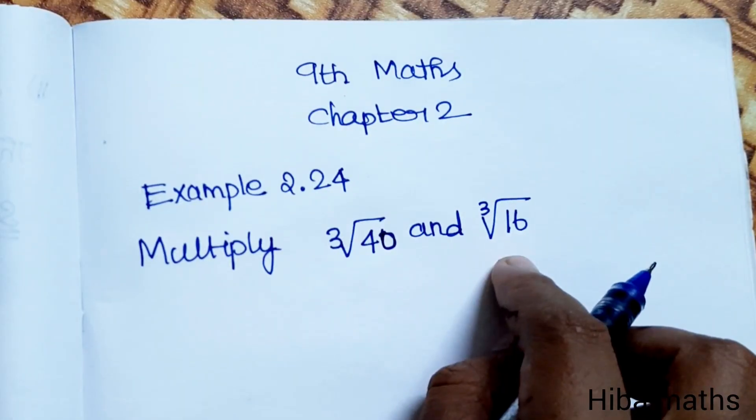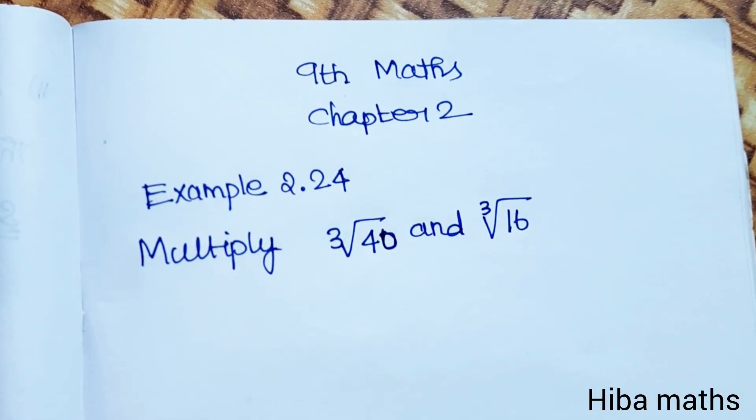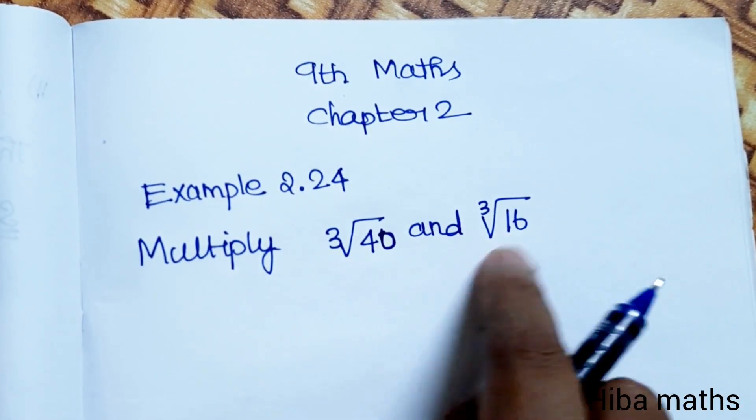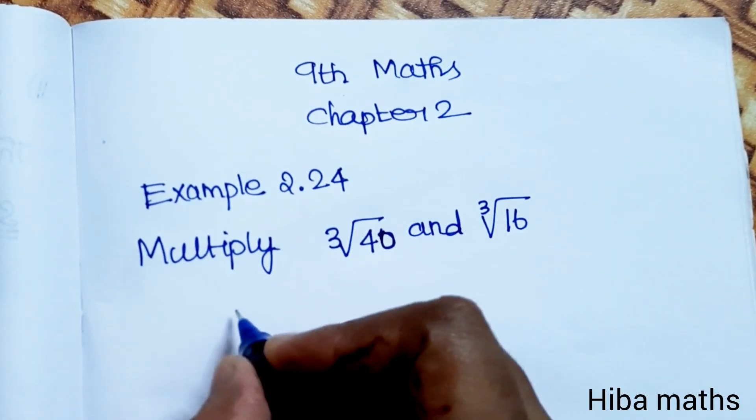So these roots are going to be multiplied. Now if you have the same root, you can multiply the numbers under the same root. Now in the solution: